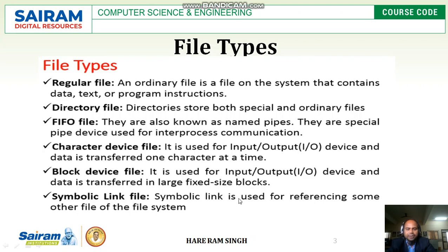Next one is a symbolic link file. A symbolic link is used for referencing some other file in the file system. In our system, for every hardware device there is a corresponding soft file present in the Unix operating system. When the kernel wants to refer to the hardware, it consults the corresponding soft file. Those soft files are called symbolic link files.